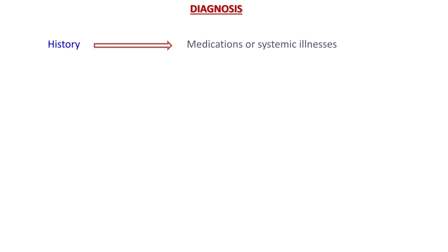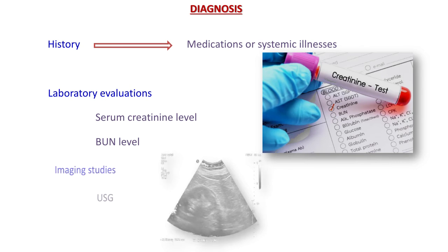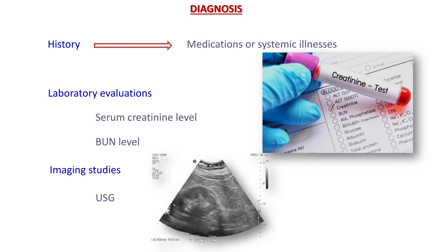For diagnosis, first a complete history must be obtained from the patient, including history of medications or systemic illnesses, as these can also be causes of acute kidney injury. Laboratory evaluations such as serum creatinine level and blood urea nitrogen level are assessed, as these waste materials are excreted by the kidneys and their levels give a clue about how well the kidneys are functioning. Lastly, imaging studies like ultrasound can be done to find any obstruction in the path of urine flow.